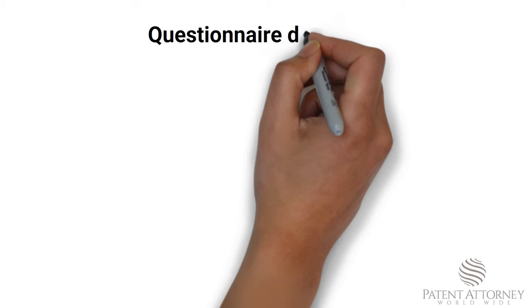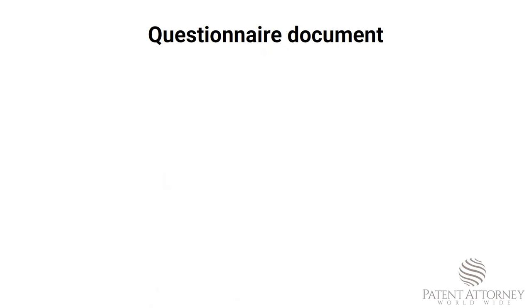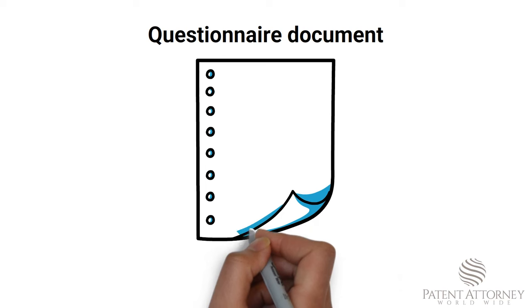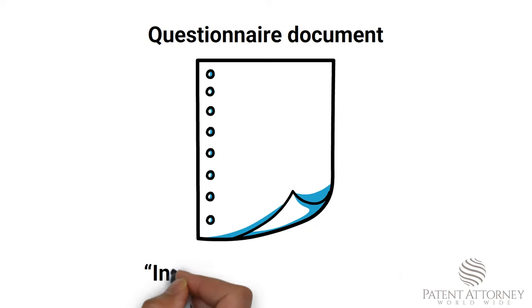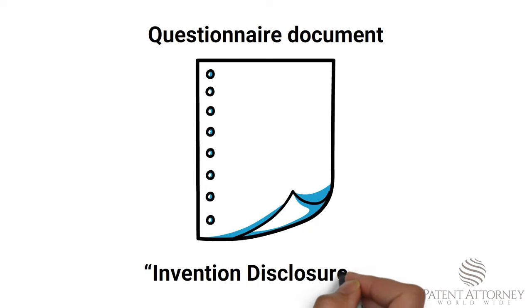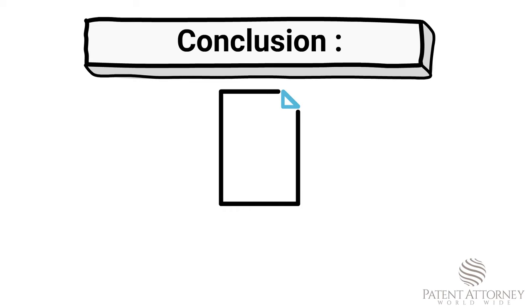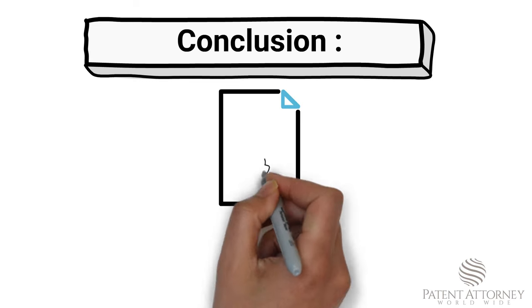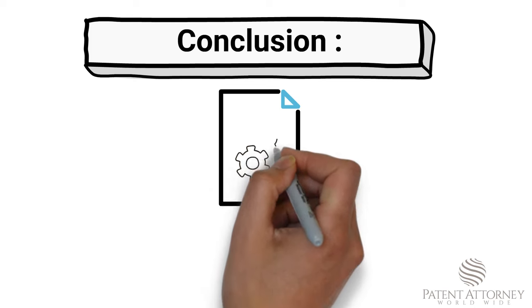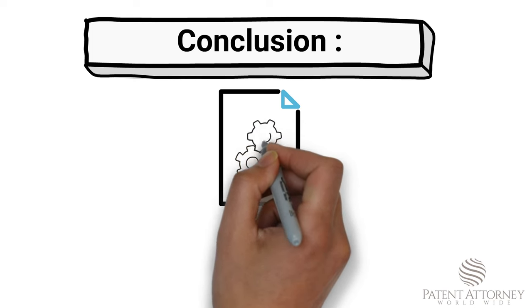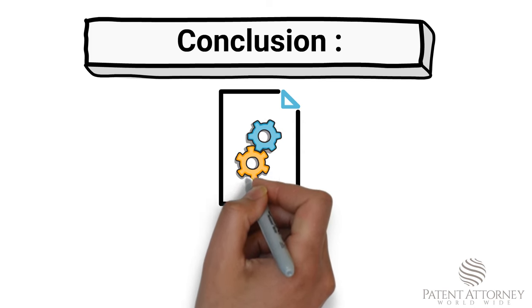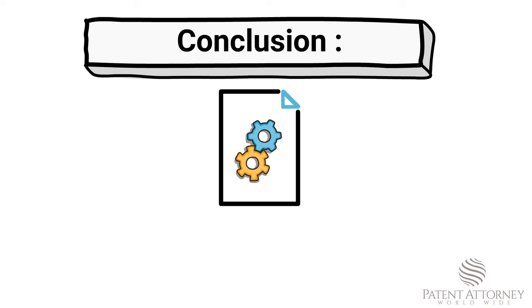Generally, the patent attorney or intellectual property firms have a questionnaire document to help you get the right information about the invention. It is called an invention disclosure form. Writing a complete invention disclosure is not about its specific format, but about the implementable details of your invention, which should clearly communicate the inventive step to the patent attorney so that he or she can write a patent application to best protect your invention.